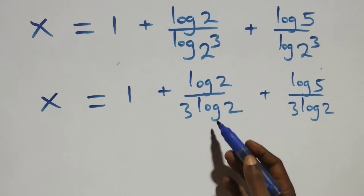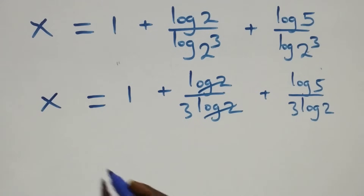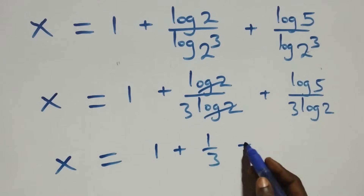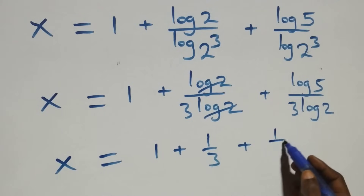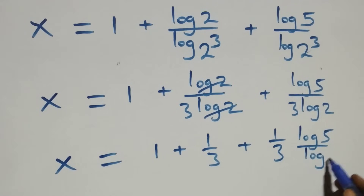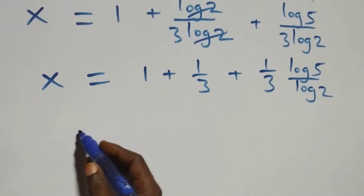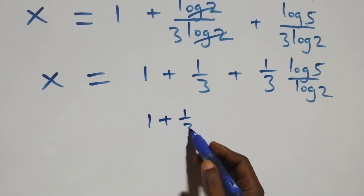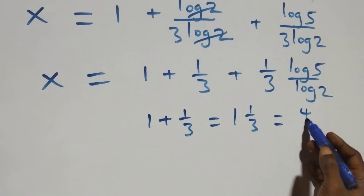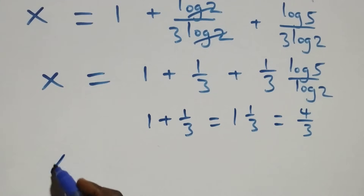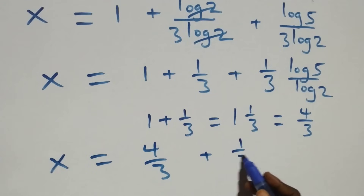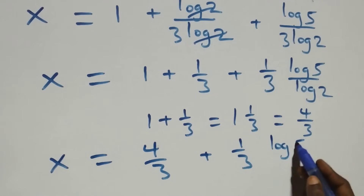Here, log 2 cancels in the second term, leaving 1 over 3. So x equals 1 plus 1 over 3, plus 1 over 3 multiplied by log 5 over log 2. And 1 plus 1 over 3 equals 4 over 3. So what we have becomes x equals 4 over 3, plus 1 over 3 times log 5 over log 2.